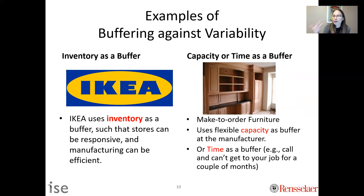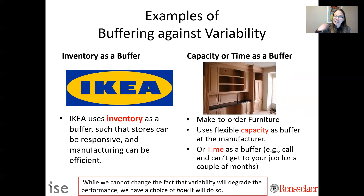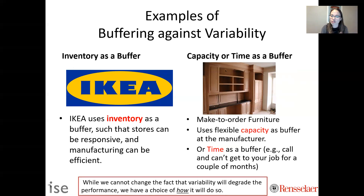All of these systems have variability — demand for furniture changes over time — but they're using different buffers. My takeaway: while we cannot change the fact that variability exists, it will degrade performance. Inventory costs money — capital invested. Extra capacity costs money — machines and people sitting idle. Time costs money because customers only have so much tolerance, and you might even have to discount them. All of these degrade performance, but we need to deal with them because the world is variable.